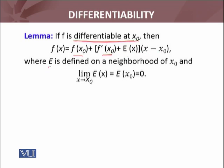Plus E(x) multiplied by (x - x₀), where E is a function which we have to find out. E is a function defined on a neighborhood of x₀ such that limit as x approaches x₀ of E(x) equals E(x₀). Furthermore, E(x₀) = 0. This means this function E(x) is such that when I calculate its limit, it equals zero, and the function's value itself at x₀ is also zero.